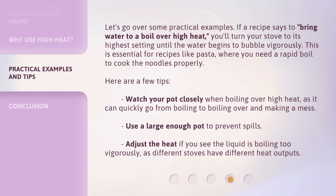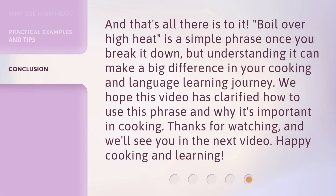Let's go over some practical examples. If a recipe says to bring water to a boil over high heat, you'll turn your stove to its highest setting until the water begins to bubble vigorously. This is essential for recipes like pasta where you need a rapid boil to cook the noodles properly. Here are a few tips: watch your pot closely when boiling over high heat, as it can quickly go from boiling to boiling over and making a mess. Use a large enough pot to prevent spills, and adjust the heat if you see the liquid is boiling too vigorously, as different stoves have different heat outputs.